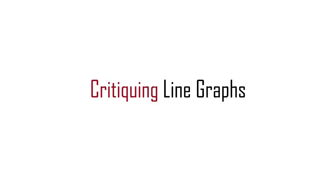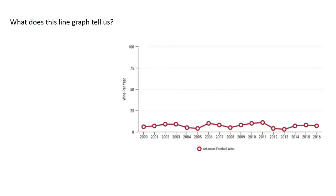Making line graphs is a tricky business, and before you make your own line graphs, I want you to be able to take a look at a line graph and see its characteristics - what things are missing, what things could be improved upon, and when a line graph is used to mislead. Take a look at this line graph about the number of wins of the Arkansas football team, playing from 2000 to 2016.